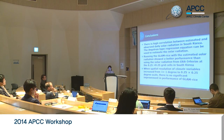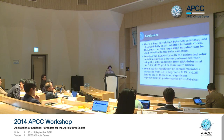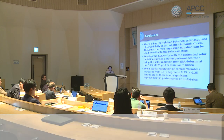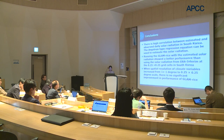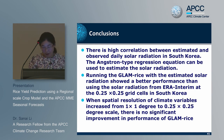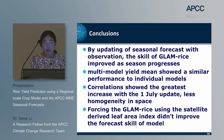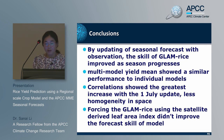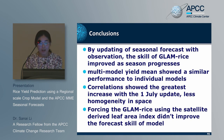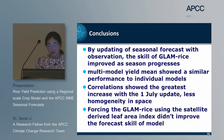Conclusions: There is a high correlation between estimated and observed daily solar radiation in South Korea, so the Angstrom-type regression equation can be used to estimate solar radiation. Running GLAM with estimated solar radiation shows better performance than using solar radiation from reanalysis data. When spatial resolution of climate variables increases from 1-degree to 0.25 by 0.25 degree scale, there are no significant improvements in GLAM Rice performance. By updating the seasonal forecast with observations, GLAM Rice performance improved progressively. The multi-model mean showed similar performance to individual models. The correlation showed the greatest increase with July update. Forcing GLAM Rice with satellite-derived leaf area index did not improve forecast performance.